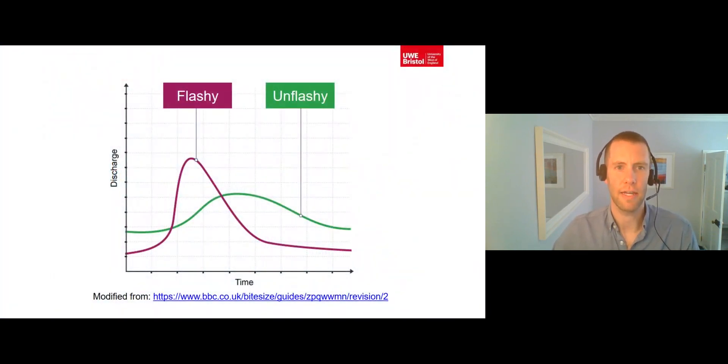As we explored in lecture three, some drainage basins have high levels of storm flow and low levels of base flow and are known as flashy or responsive catchments, whilst others have low levels of storm flow and high levels of base flow and are known as unflashy or unresponsive catchments. Most drainage basins lie somewhere between these two extreme states and how flashy a drainage basin is depends on both natural and human factors.